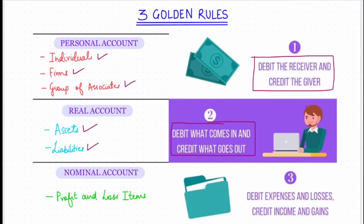Nominal account, also called the temporary account, involves recording of profit and loss transactions. The rule is: debit the expenses and losses, and credit the income and gains. For example, you sold goods worth rupees 5000 to company XYZ — the cash account will be debited because money is coming in, and the sales account will be credited because you made a sale. Just go through the rules again and practice as many examples as you can.